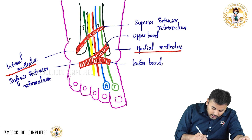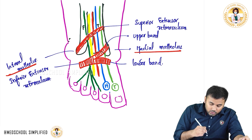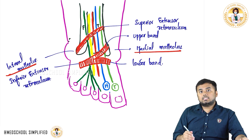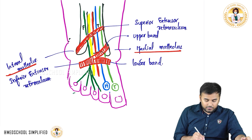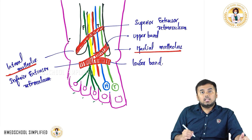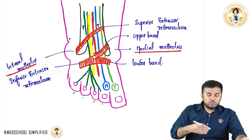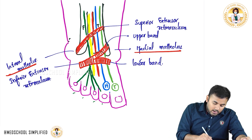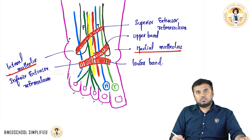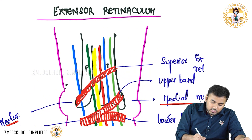After the deep peroneal nerve, next you have got another muscle all the way coming, and these tendons are attached to all the digits. This is an extensor muscle attached to digits — fifth, fourth, third, and second digit — so it is called extensor digitorum longus. And finally we have come across the last one which is called peroneus tertius.